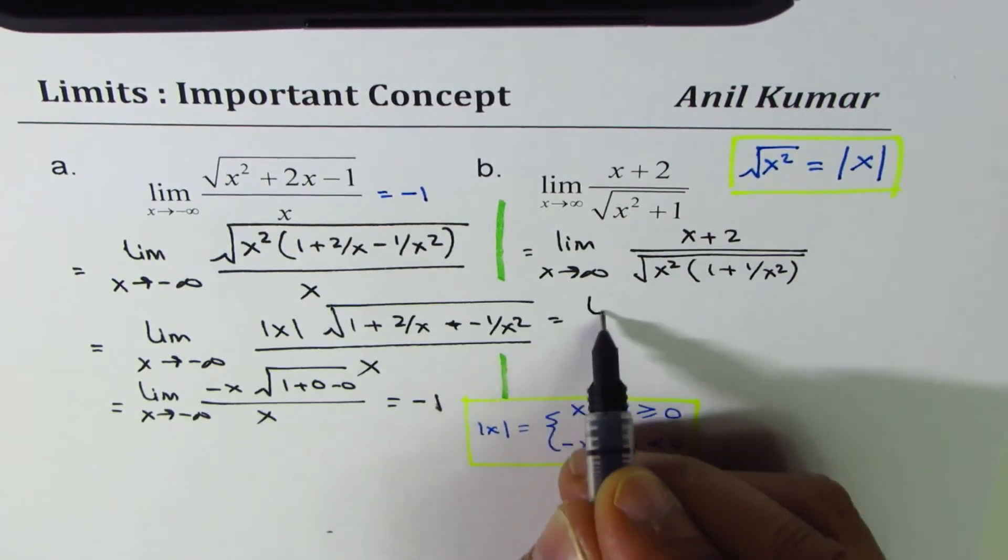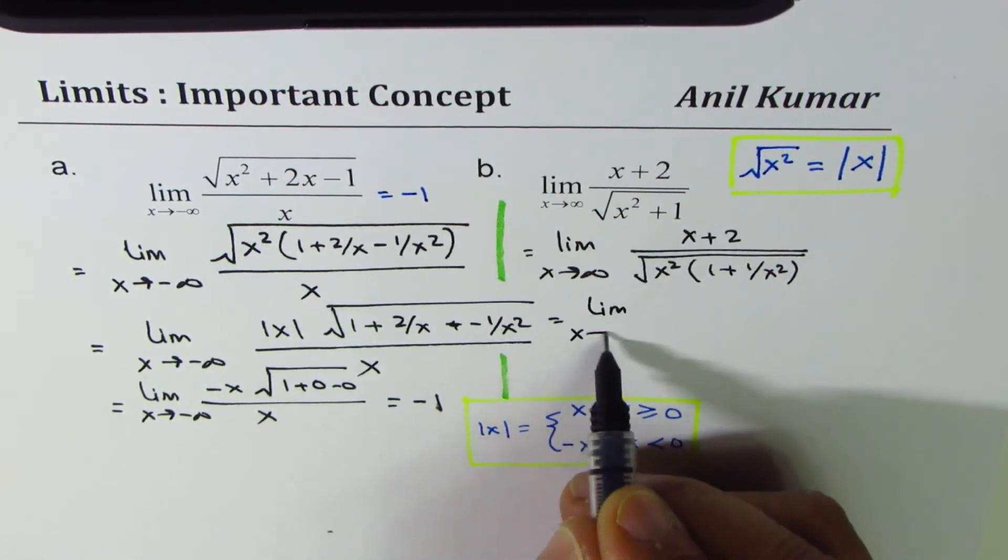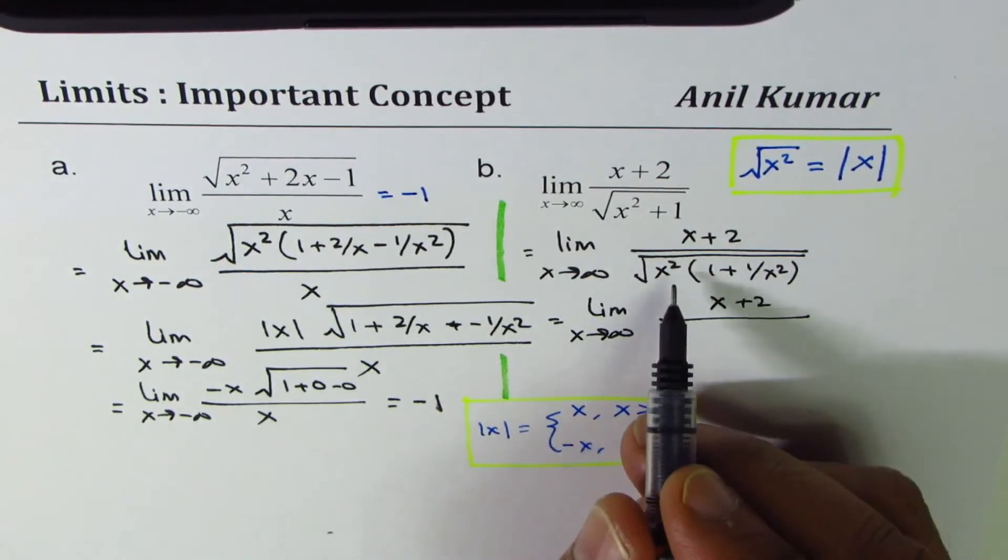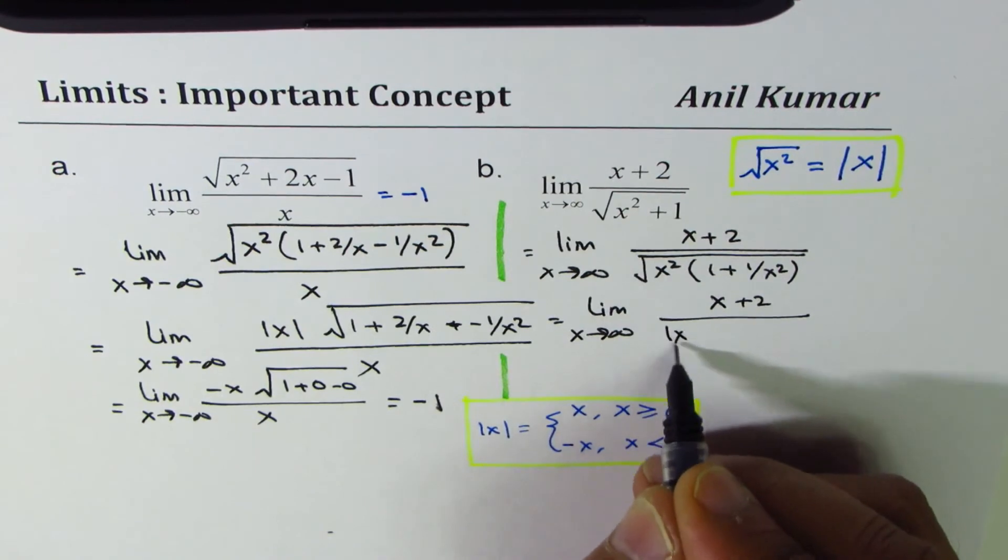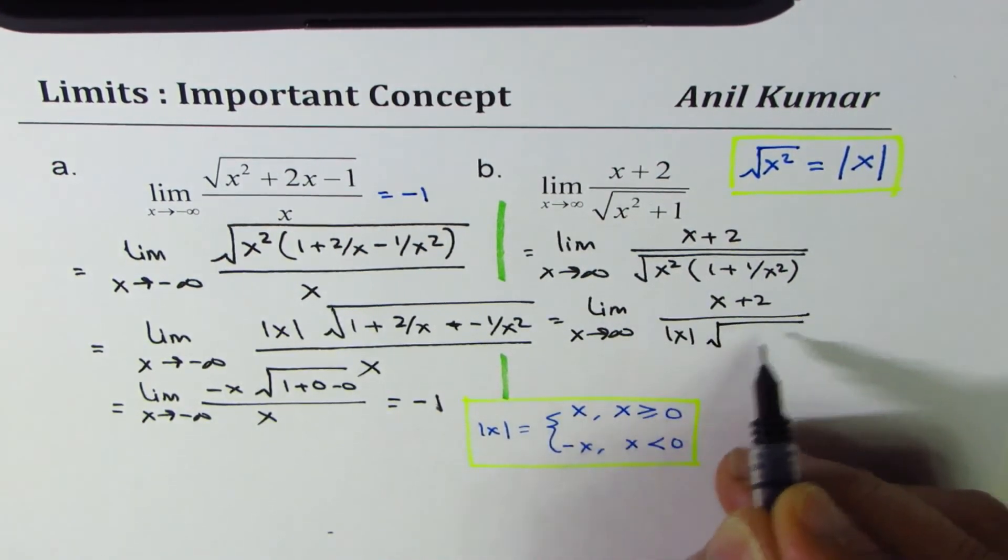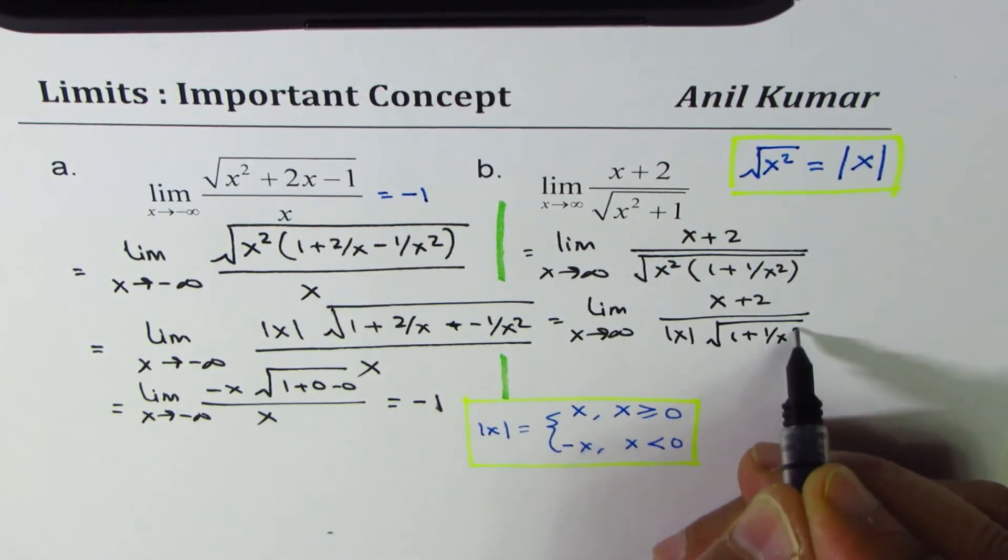Now, this could be written as limit x approaches infinity. Numerator is x plus 2. And what is square root of x squared? Absolute value of x. Absolute value of x. Now, within square root, we have 1 plus 1 over x squared.